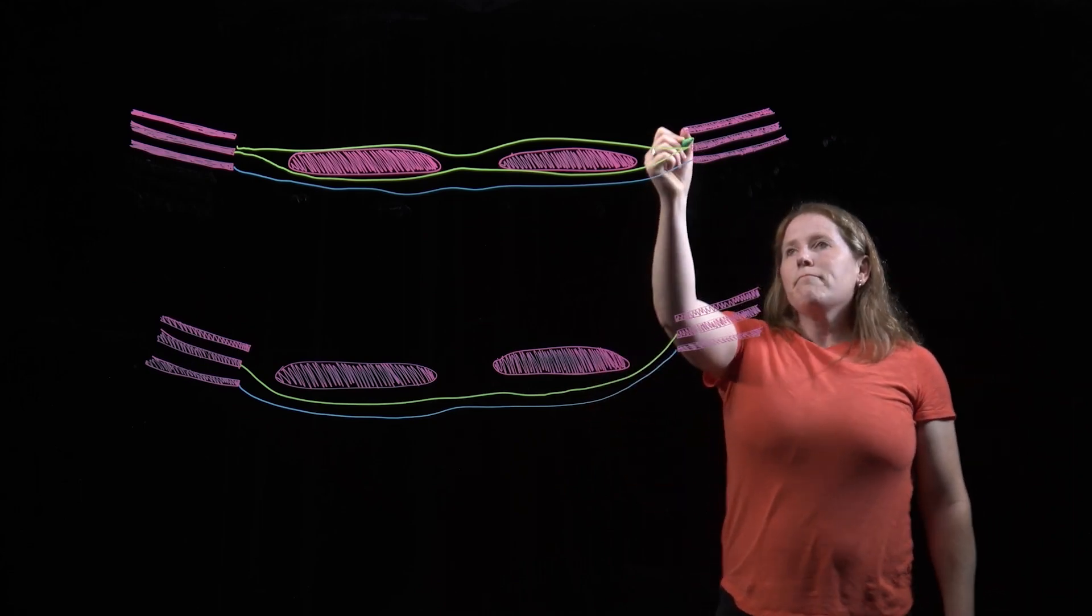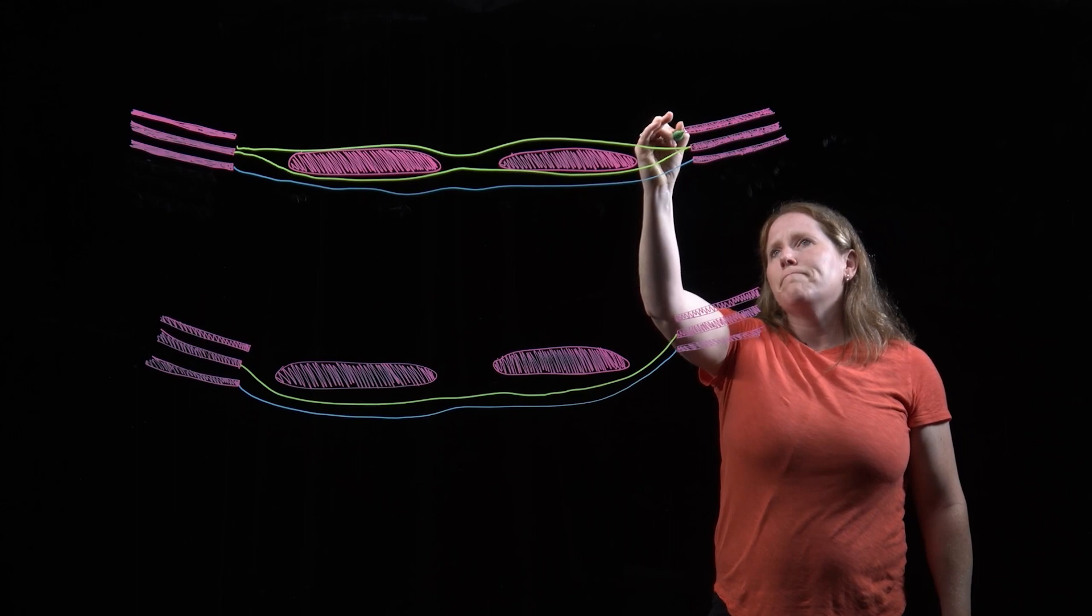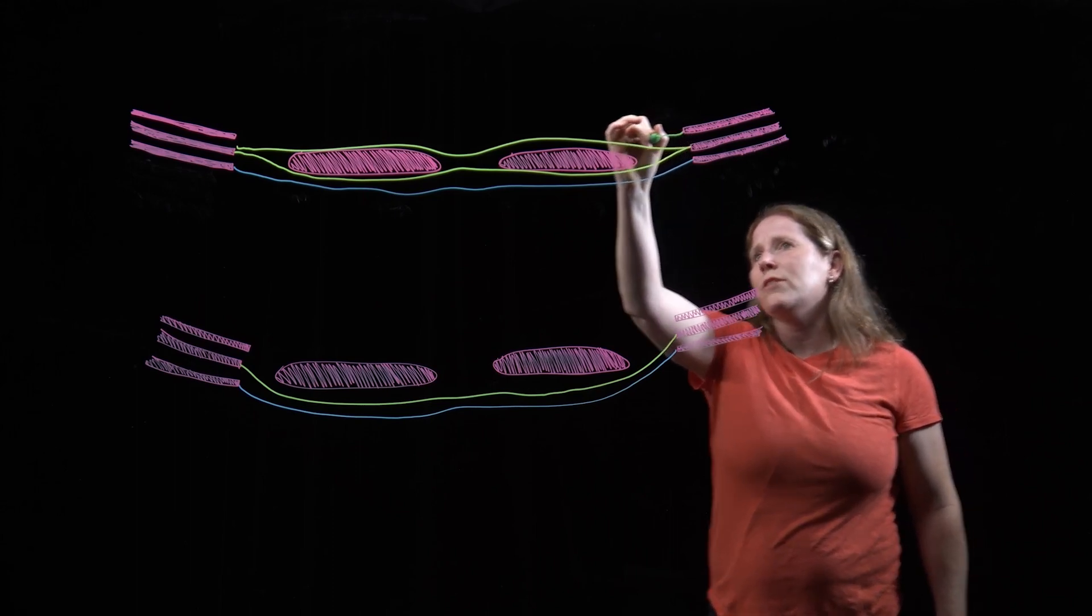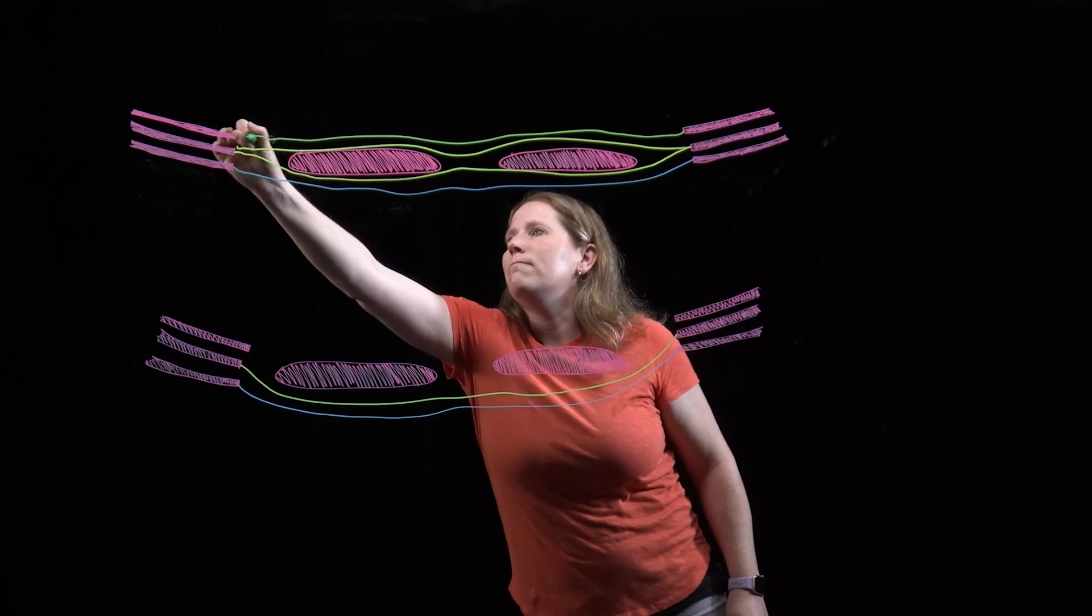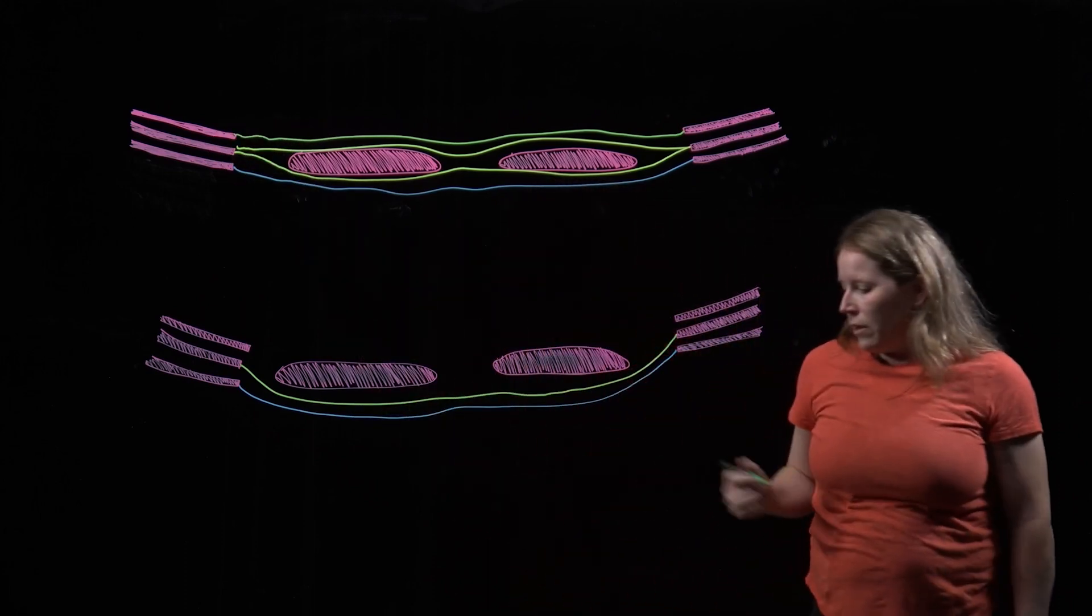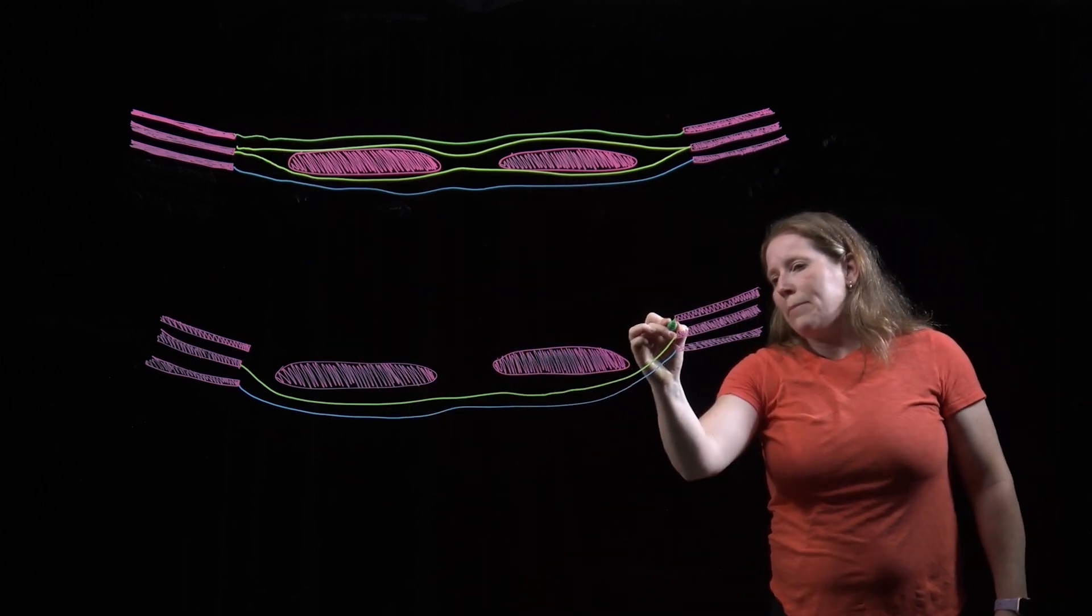Lastly, we have transverse abdominis, which is going to pass posterior if we're up here. And here also wraps anterior.